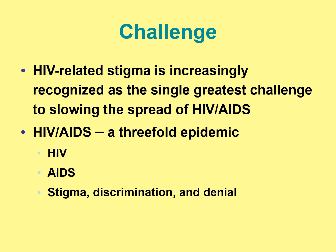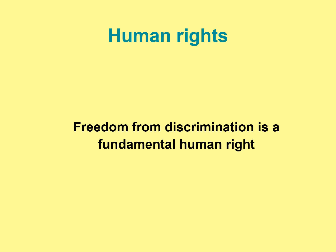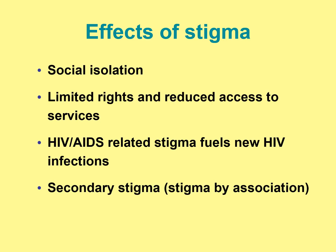HIV-related stigma is increasingly recognized as the single greatest challenge to slowing the spread of HIV and AIDS. It is a three-fold epidemic: HIV, AIDS, and the stigma, discrimination, and denial related to the disease. Aside from the fact that freedom from discrimination is a fundamental human right, the effects of stigma include social isolation, limited rights, and reduced access to services, leading to a delay in diagnosis. HIV and AIDS-related stigma fuels new HIV infections. Secondary stigma is stigma by association — affecting those closely related to an HIV or AIDS patient.